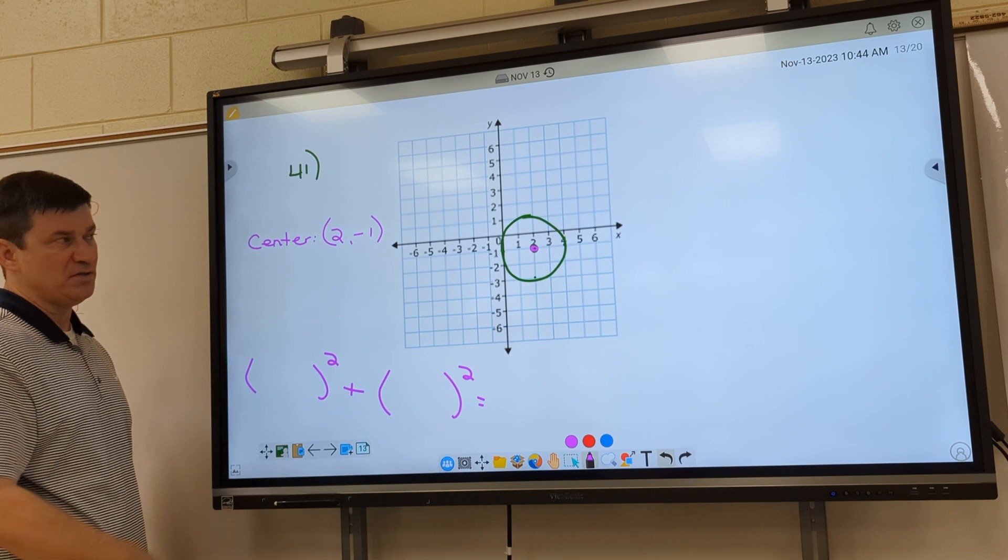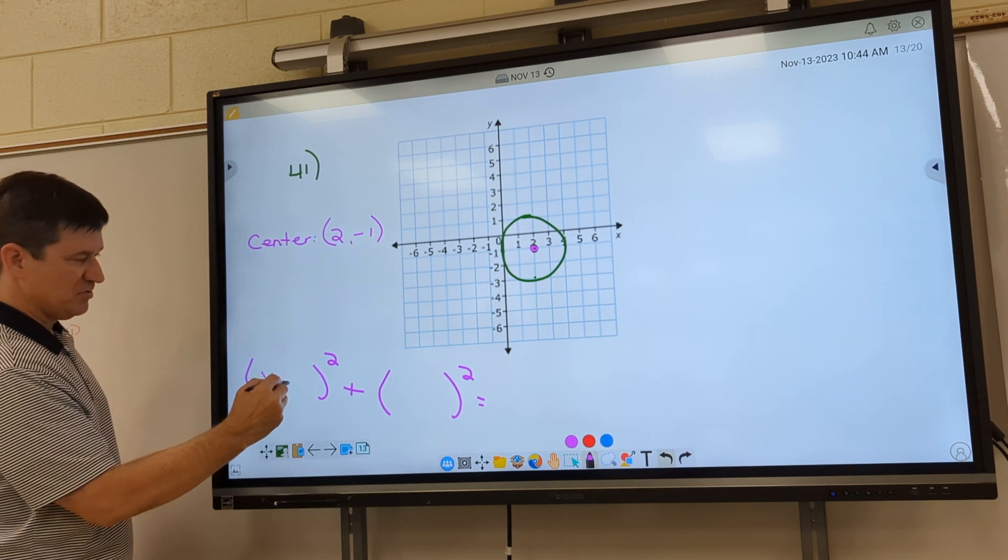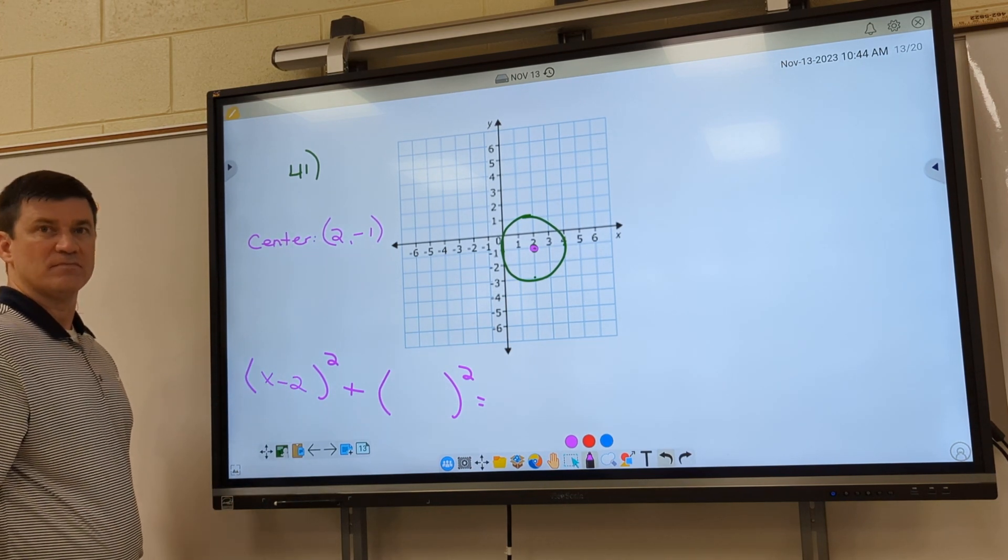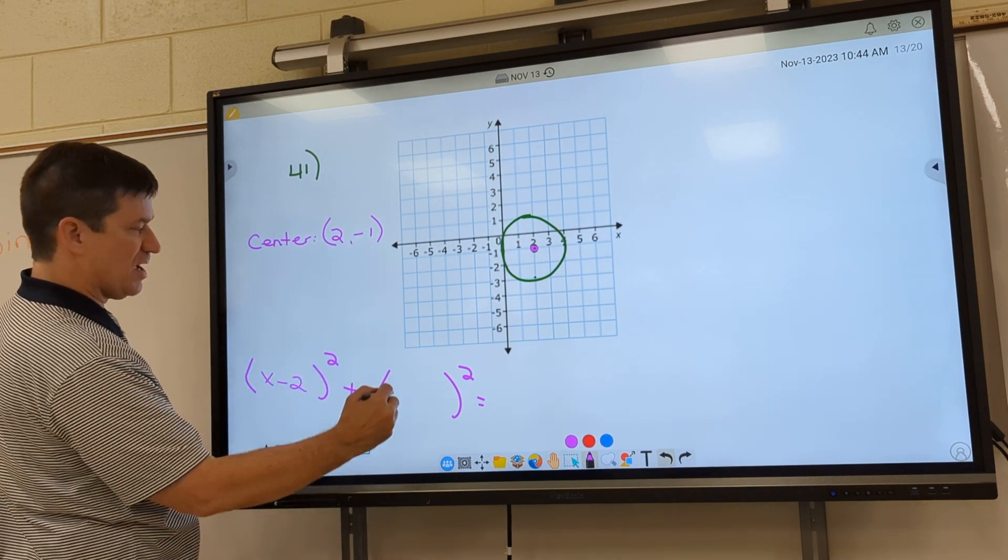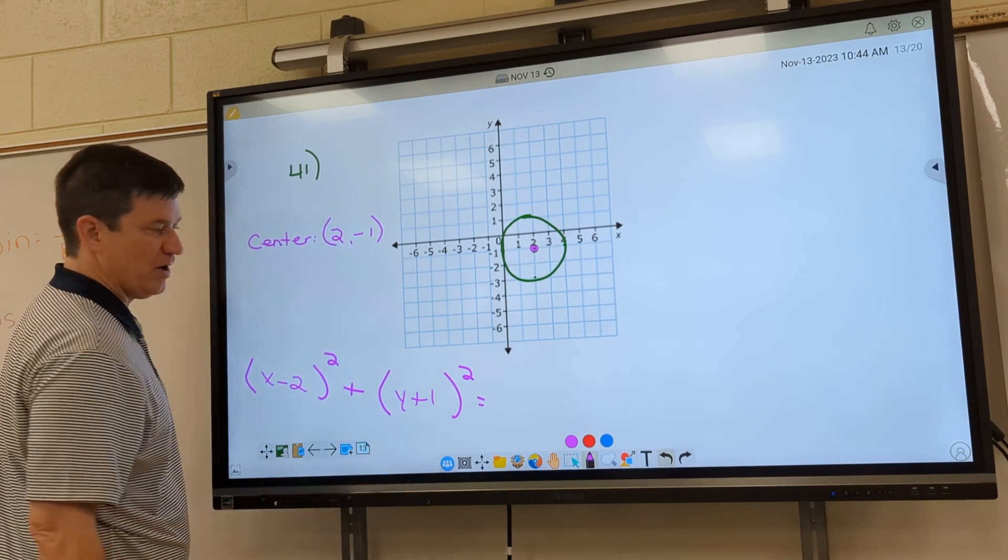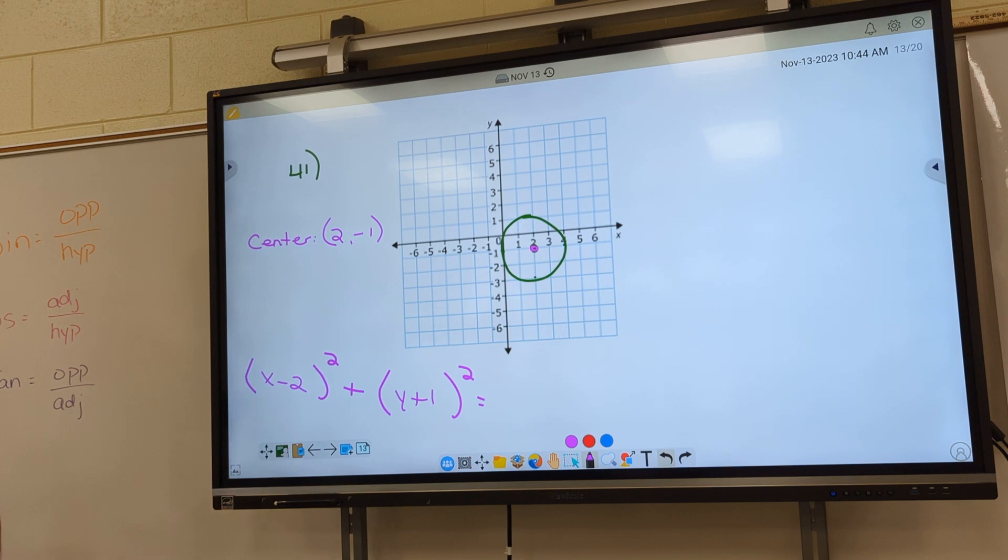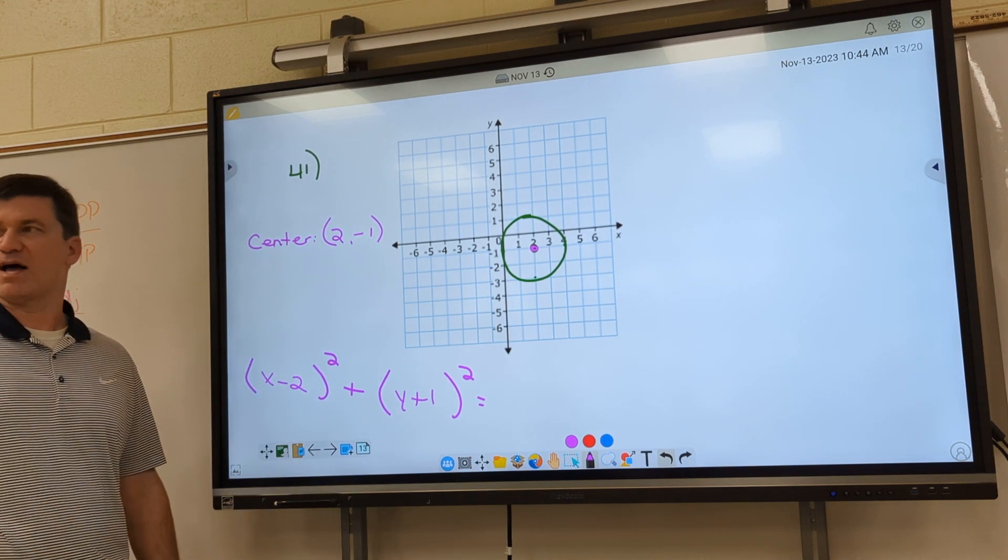And if you got the center, you can start writing your equation. What goes in the first parenthesis? X minus 2 squared. What goes in the second parenthesis, Ashley? Flip your sign. Y plus 1 squared. First block understood that.